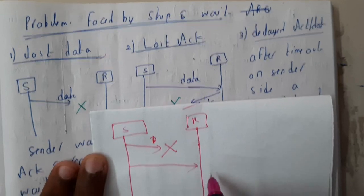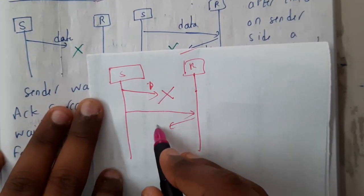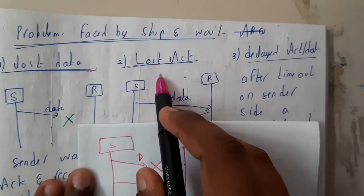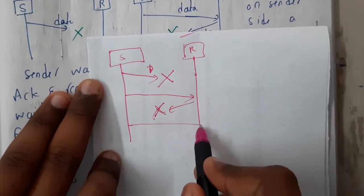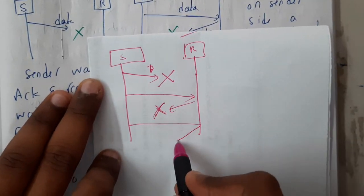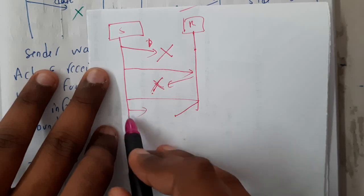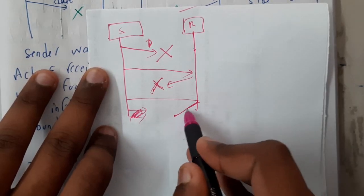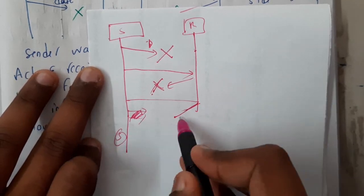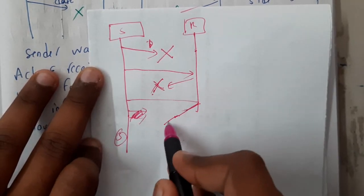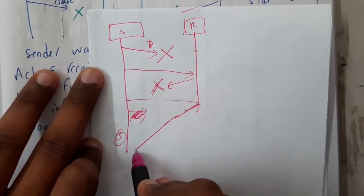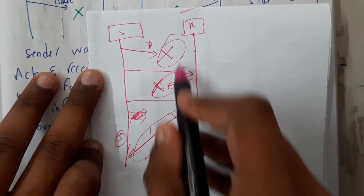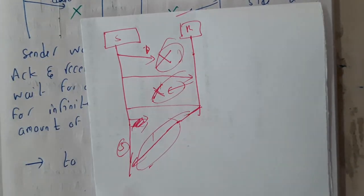Lost data is one problem. Similarly, you may transmit the data but not receive the acknowledgement — the acknowledgement is missing somewhere. That is lost acknowledgement. And you send the data but after a very long time, like two or three hours, the acknowledgement finally arrives — that is a delayed acknowledgement.